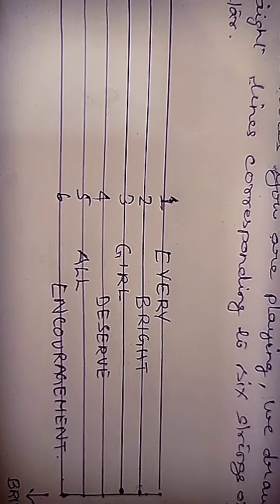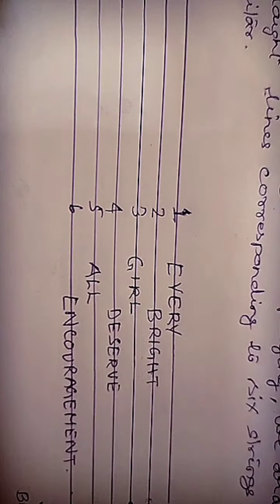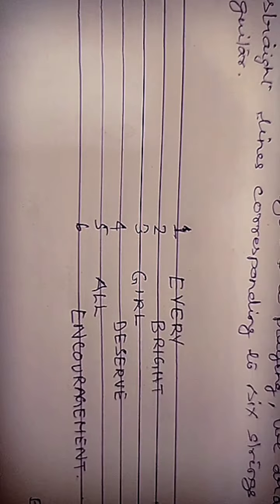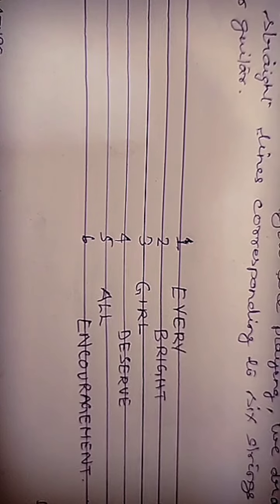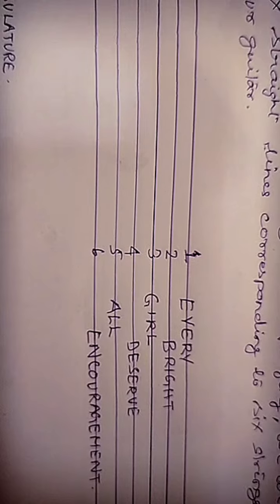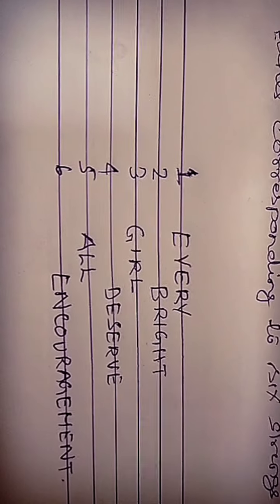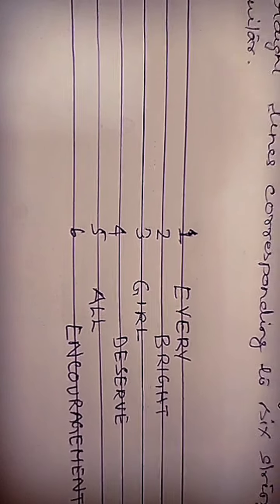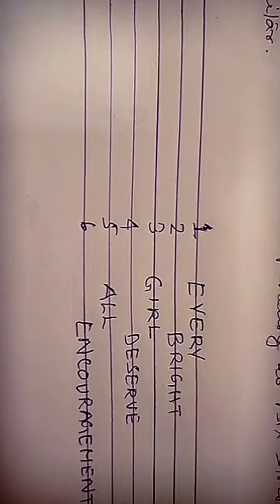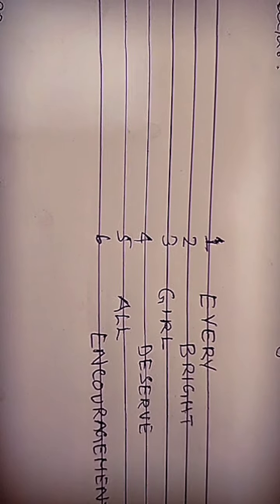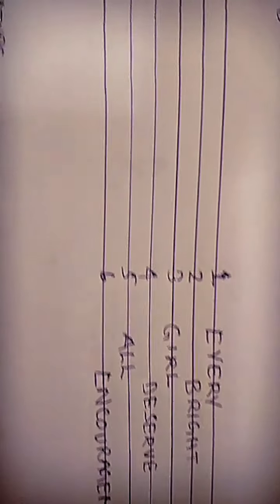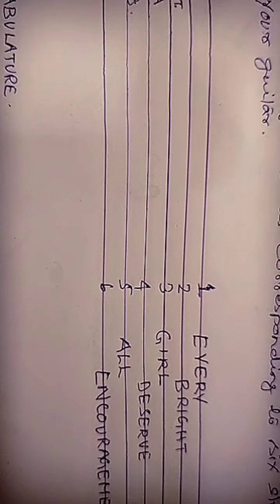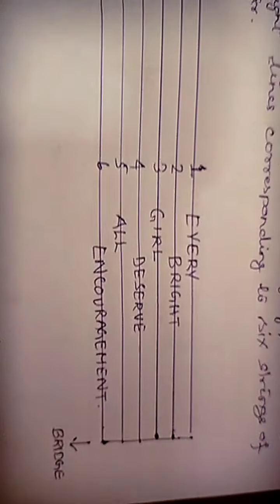We are trying to find the notes that correspond to different frets and different strings. Your guitar has strings that correspond to certain notes. To remember the name of your strings, you have to remember this mnemonic: Every Bright Girl Deserve All Encouragement — where Every stands for E, Bright for B, Girl for G, Deserve for D, All for A, and Encouragement for E. So the names of your guitar strings go E, B, G, D, A, E.